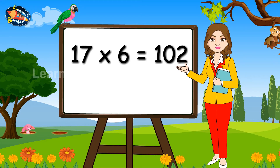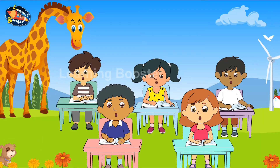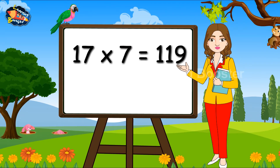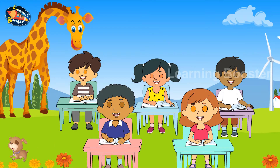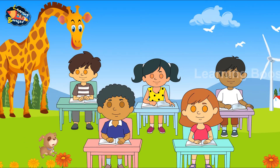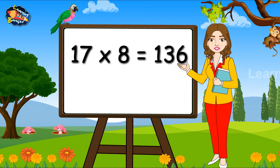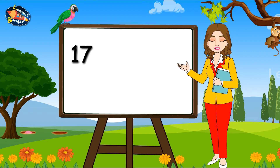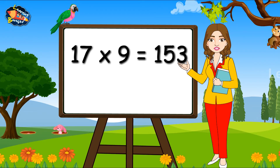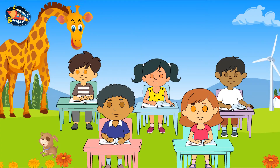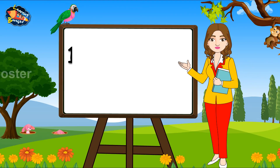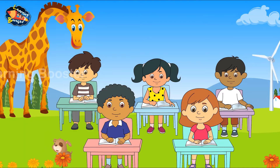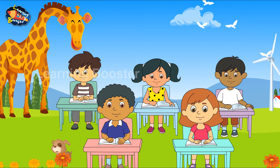17 6s are 102. 17 7s are 119. 17 8s are 136. 17 9s are 153. 17 10s are 170.